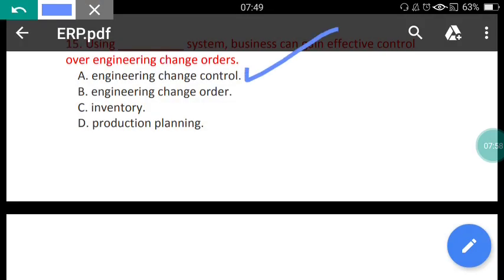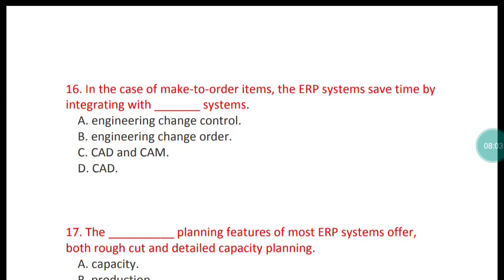Question 16: In the case of make-to-order items, the ERP system saves time by integrating with which systems? The options are: engineering change control, engineering change order, CAD/CAM, and CAD. The correct answer is option C — in the case of make-to-order items, the ERP system saves time by integrating with CAD and CAM systems.